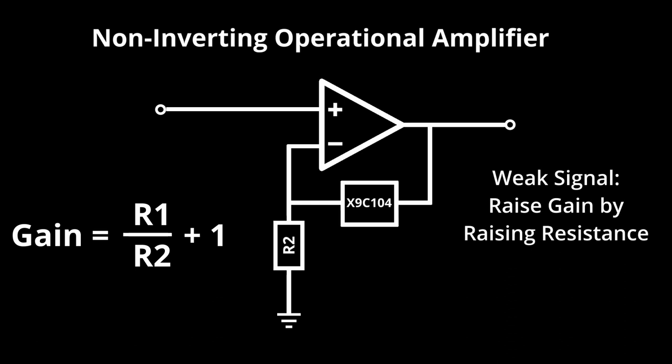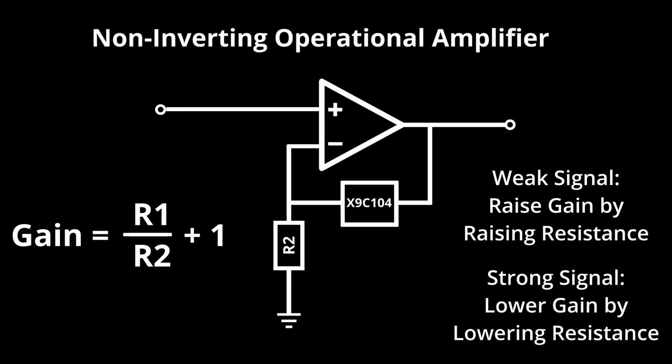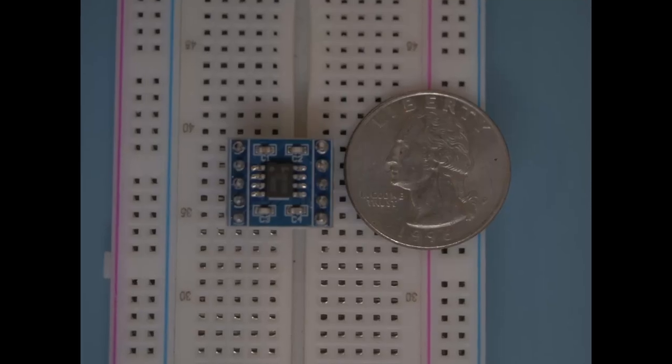If the signal is weak, I raise the gain in order to get more detail out of the sound. If the volume goes up too high and the signal is getting too strong, I can lower the gain to protect the microcontroller.